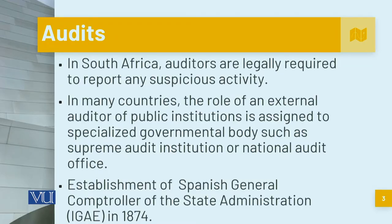In South Africa, auditors are legally required to report any suspicious activity. In many countries, the role of an external auditor for public institutions is assigned to a specialized governmental body such as a Supreme Audit Institution or National Audit Office. The establishment of the Spanish General Comptroller of the State back in 1874 is an example of mechanisms used to curb corruption.